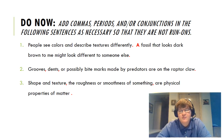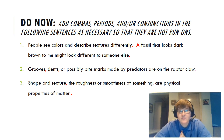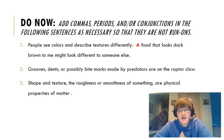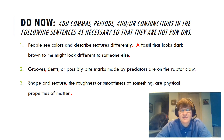After you heard them read out loud, you should be able to pick up on some of the more obvious errors — I've marked them in red. Number one: add a period after 'differently,' then capitalize 'A fossil that looks dark brown to me might look different to someone else,' and add a period at the end. Number two starts with a list, so add commas: grooves, dents, or possible bite marks made by predators are on the raptor claw. Period. Number three: shape and texture, comma, the roughness or smoothness of something, comma, are physical properties of matter — separate these with commas and end with a period.